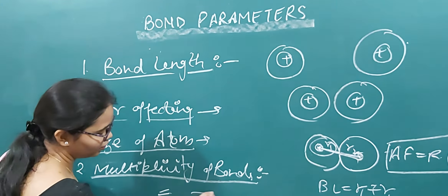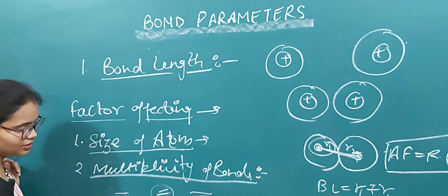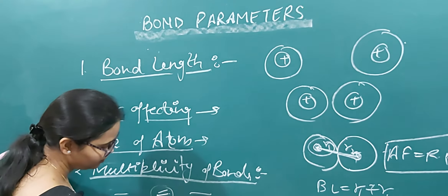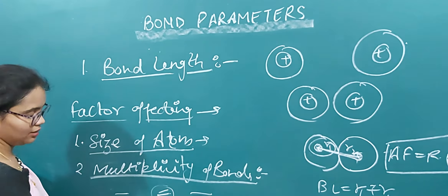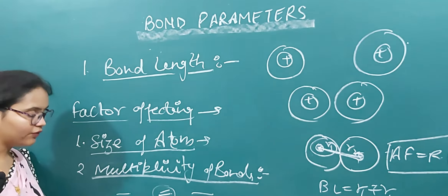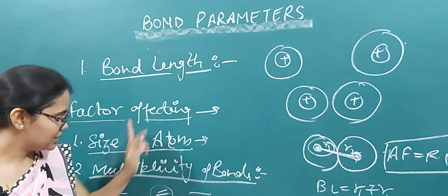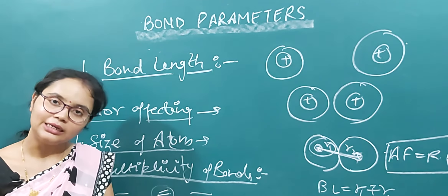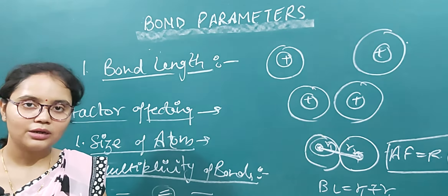The second factor is multiplicity of bonds. A single bond involves sharing of one electron pair, a double bond two pairs, and a triple bond three pairs. In multiple bonds, more electrons are involved in bond formation, so the atoms come closer to each other. Therefore, with an increase in the multiplicity of bond, bond length decreases.